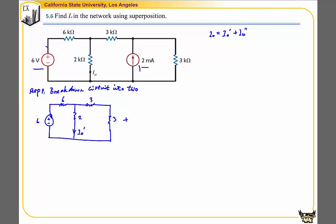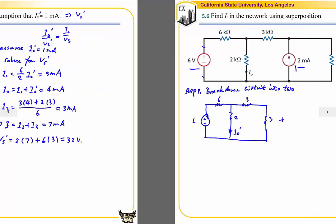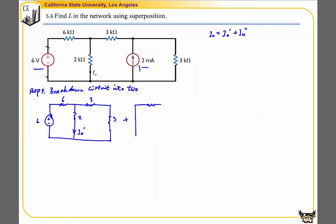When we set the voltage supply to zero, it means there's no voltage drop between these nodes. So we replace the voltage source with a wire. Copy everything else. This is the current I0''.